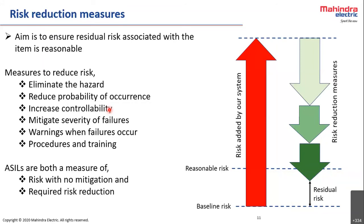Further risk reduction measures include mitigating severity — severity increases with speed, so most driverless car programs consider medium-speed vehicles to reduce collision velocity. Warnings to the driver when a failure occurs also help — for example, if failure of an electric park brake function is detected and the driver is informed with an appropriate warning during driving, the hazard related to vehicle parking can be avoided. Procedures and training — such as service manuals and extensive training for first responders handling high-voltage connectors — also reduce risk.